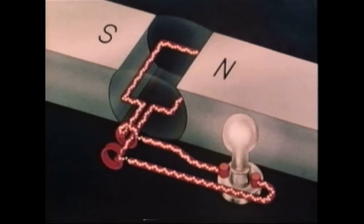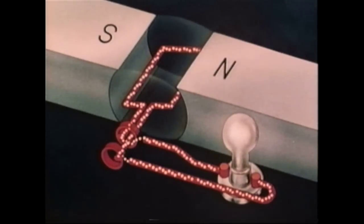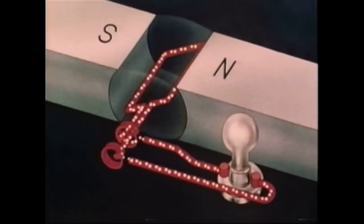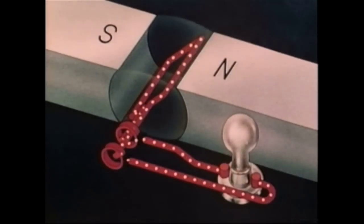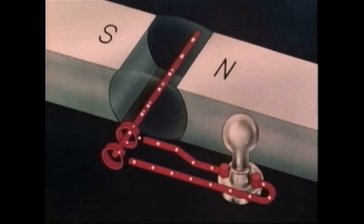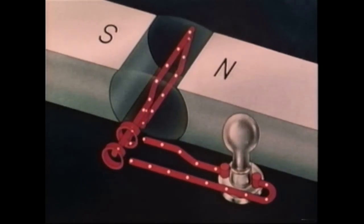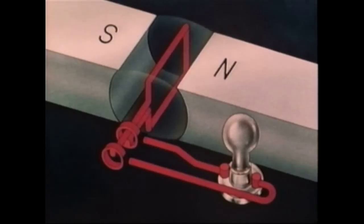Then as the conductor continues its rotation at a constant speed, it cuts through fewer and fewer lines of flux, and less and less current is induced. Eventually, the conductor moves parallel to the field. At this point, no current flows because the conductor doesn't cut through any lines of flux.